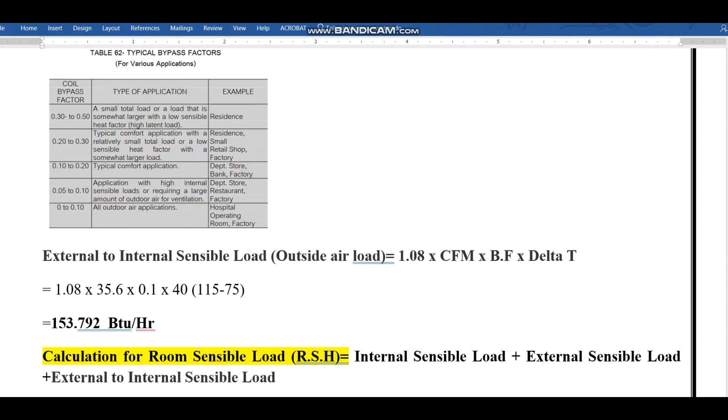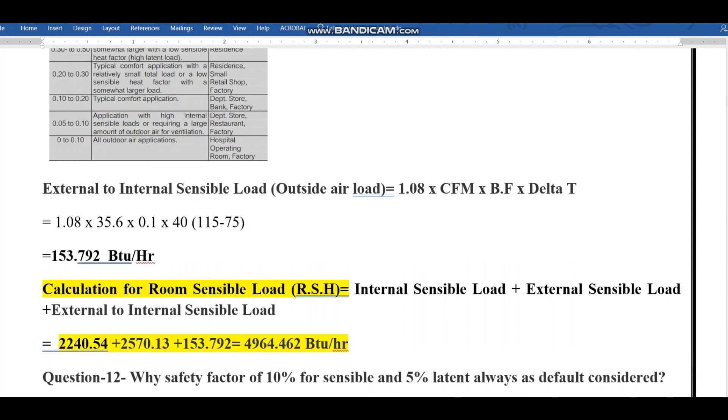Finally the answer is external to internal sensible load, outside air load equals 1.08 times CFM. We received from the number of persons using the actual reference table, that was 35.6 CFM. Bypass factor for the initial stage we consider 10 percent or 0.1. Delta T equals outside temperature minus indoor temperature, that is 115 minus 75, which is 40. Total load is 153.792 BTU per hour.